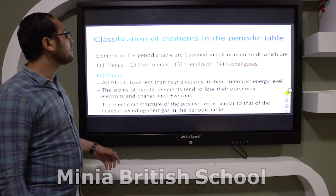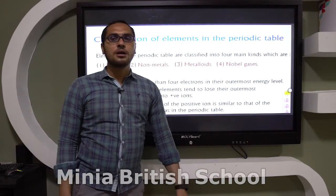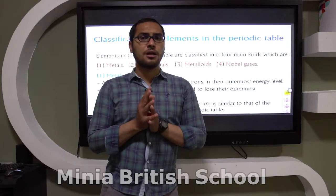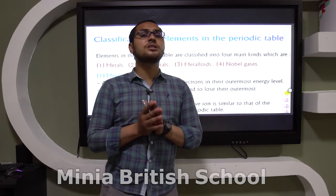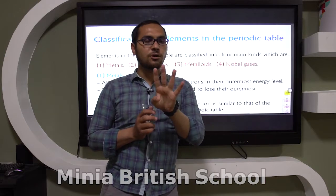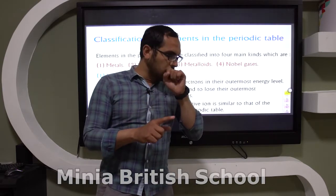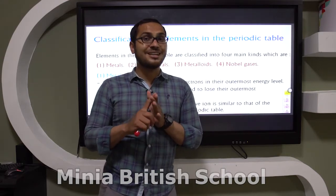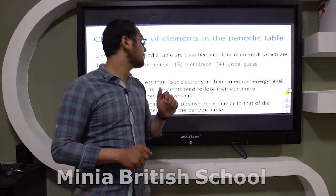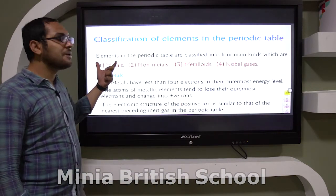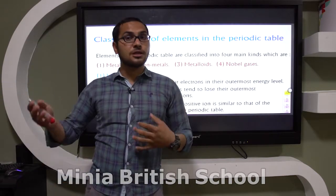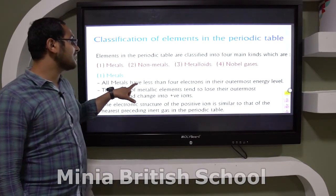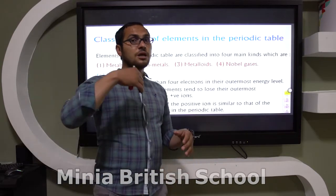Let's move on to the classification of elements in the periodic table. All elements in the modern periodic table are classified into four kinds: metals, non-metals, metalloids, and inert gases, also called noble gases.